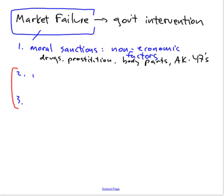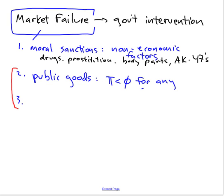One of them is the case of public goods. The problem with public goods, as we'll see in a moment, is that it's not a moral sanction problem — it's an economic problem — that you just can't make a profit selling them. A public good is one that no private firm can produce for profit; therefore, private firms will not produce them, and if we want them, we have to get them from the government.